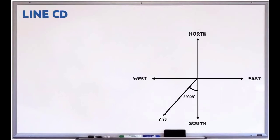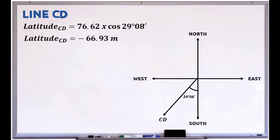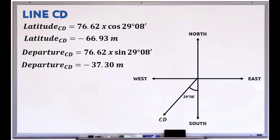For line CD, which lies in the third quadrant, the latitude and departure are both negative. The latitude of line CD equals 76.62 × cos(29°8') = negative 66.93. The departure of line CD equals 76.62 × sin(29°8') = negative 37.30.